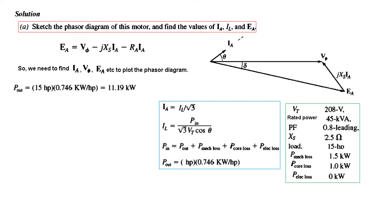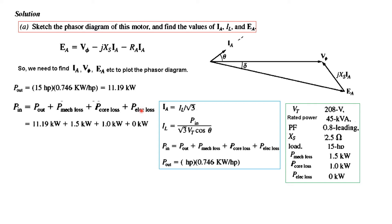First, we convert horsepower to electrical power by multiplying by 0.746 kW/hp, giving a motor output power of 11.19 kW. The total input power equals power out plus mechanical losses plus core losses plus electrical losses. Since electrical loss is zero, and using the given mechanical and core losses, the input power required to drive this load is 13.69 kW.